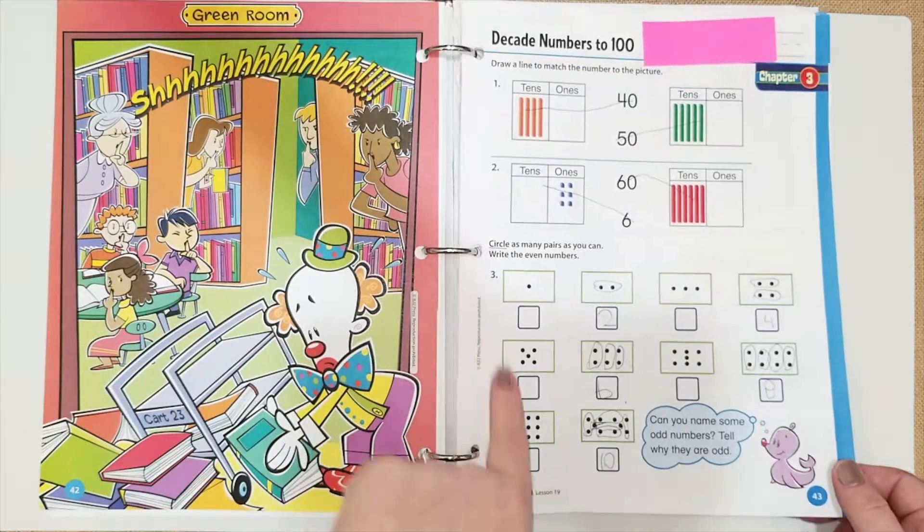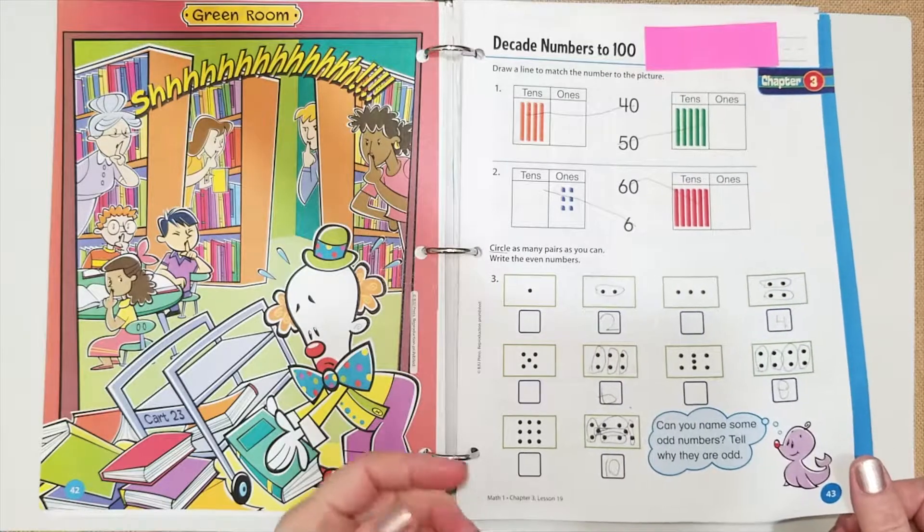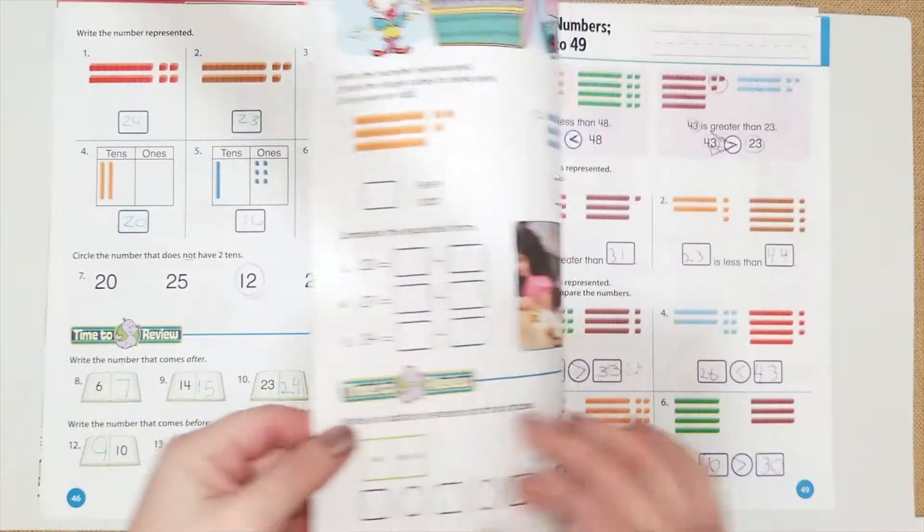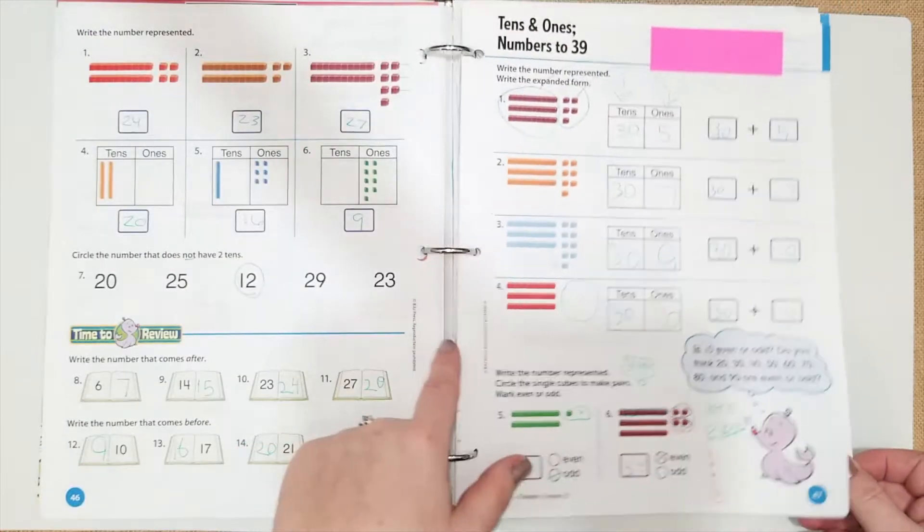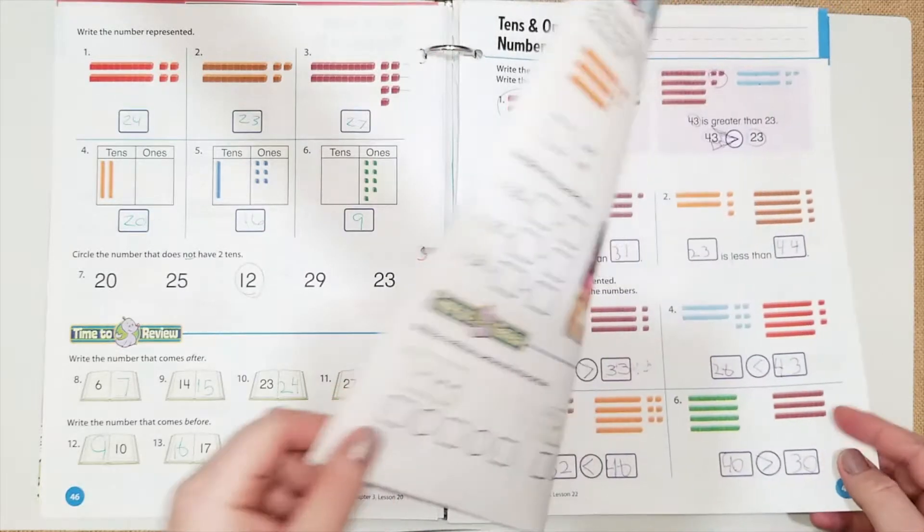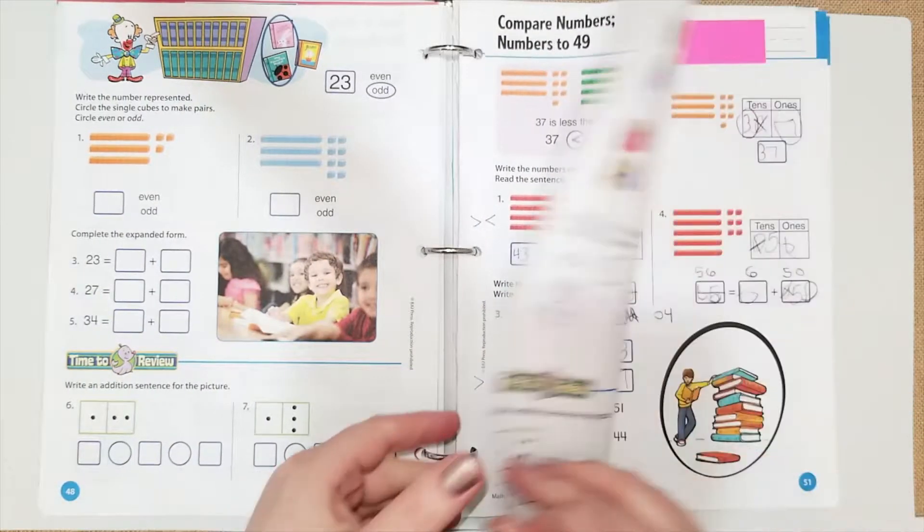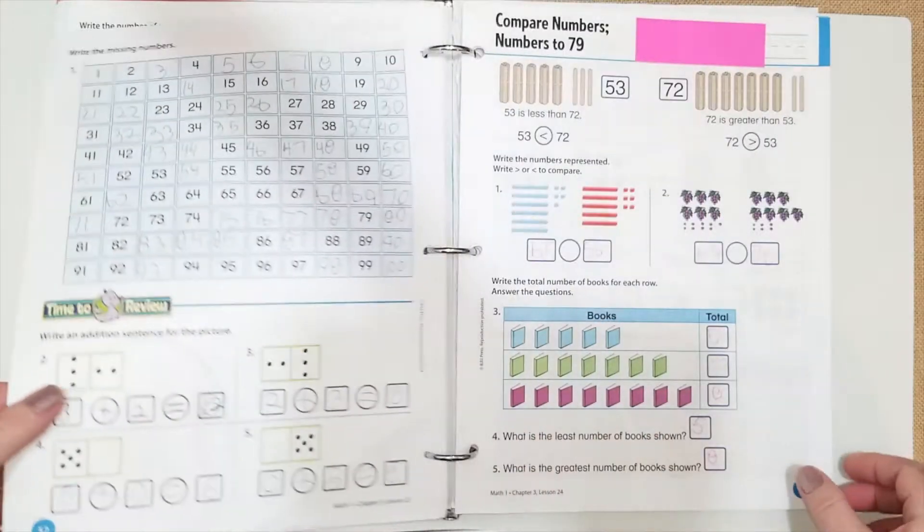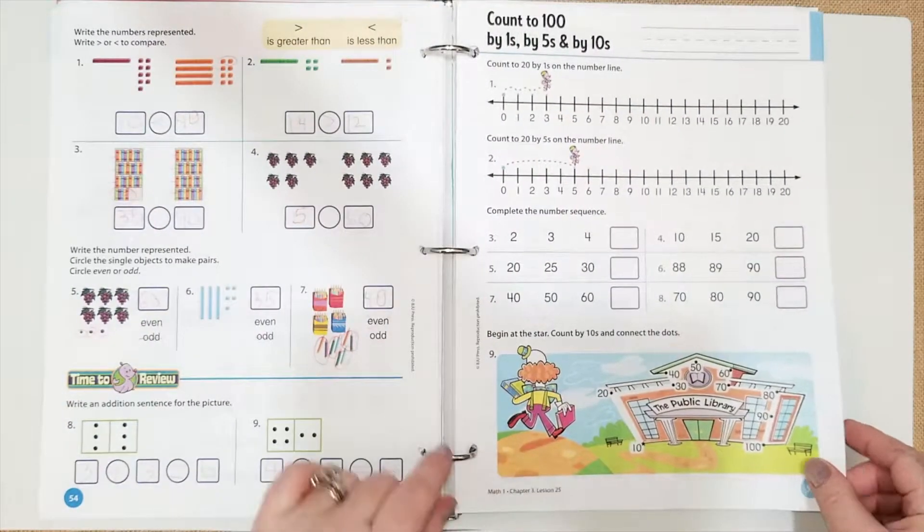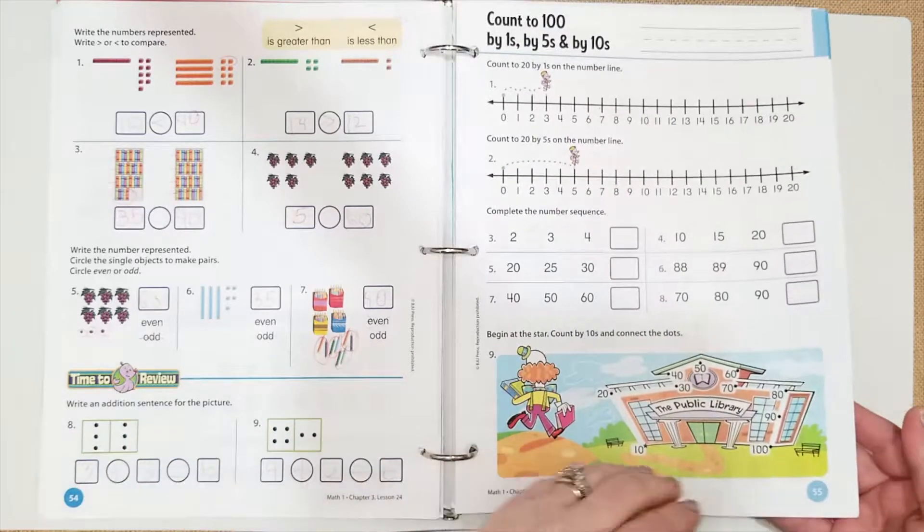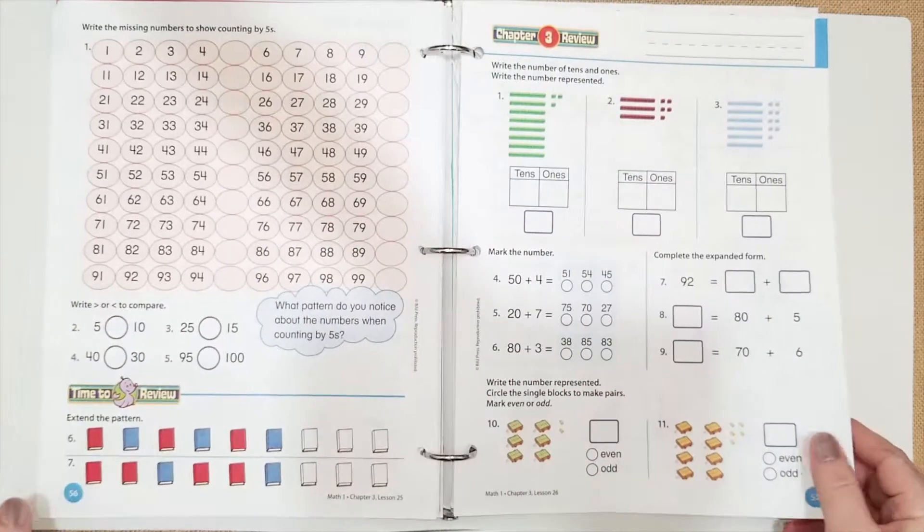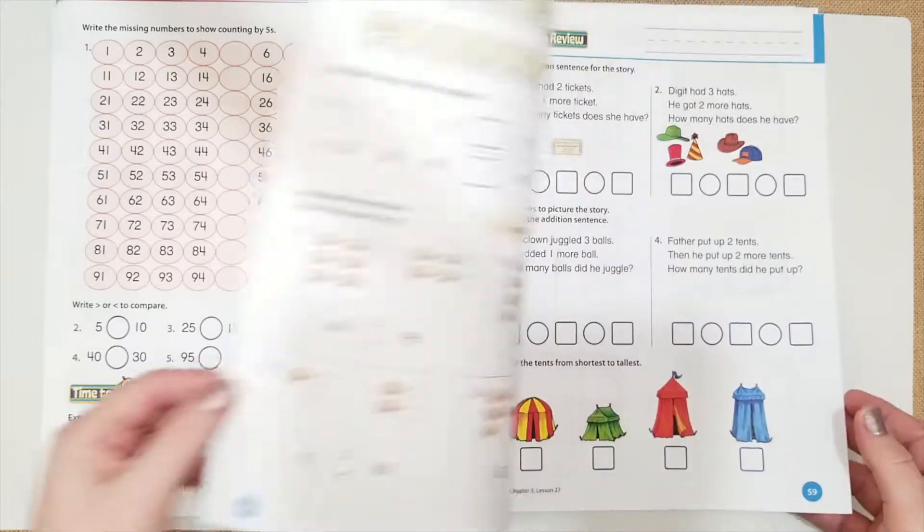So this is the third chapter. This is 10 to 100. This is just having them kind of look at it, figure out what's in the tens and what's in the ones and then adding it, comparing numbers, which is what she's familiar with. And this is what she's going to be starting to work on, which is count to 100 by ones, fives and tens, which we have done this year already. So it will just be a nice little review.